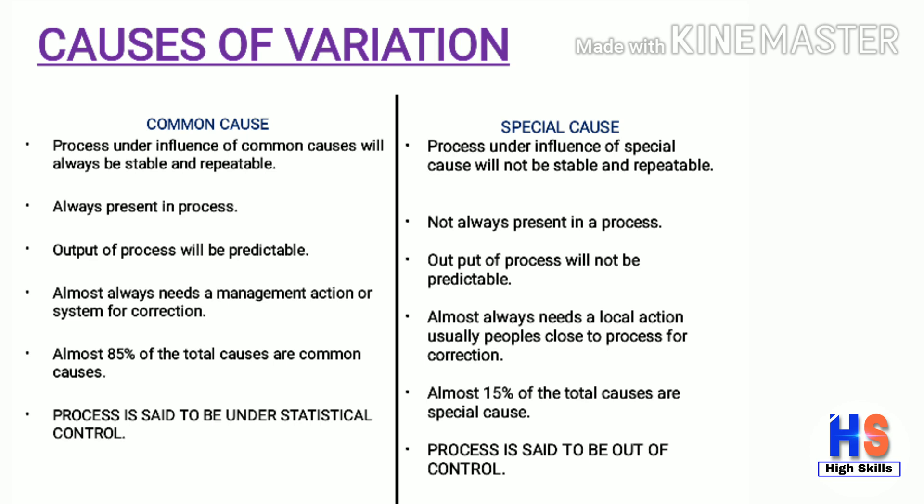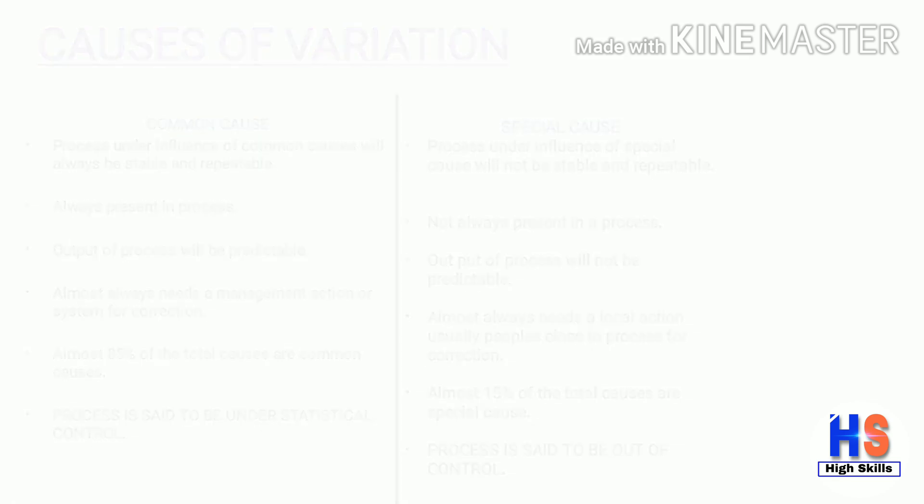For special cause: a process under the influence of special cause will not be stable and repeatable. Special cause is not always present in a process. The output of the process will not be predictable. Almost 15% of total causes are special causes. In special cause, the process is said to be out of control.